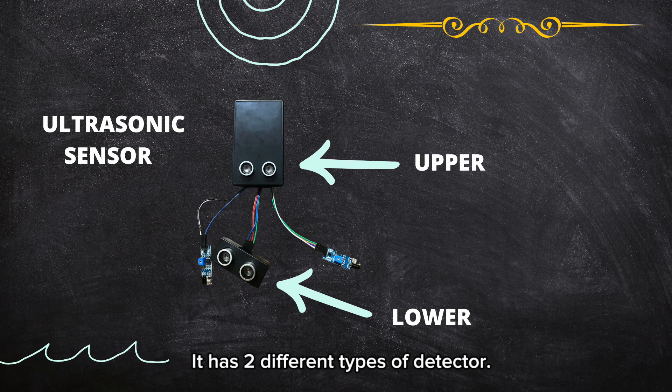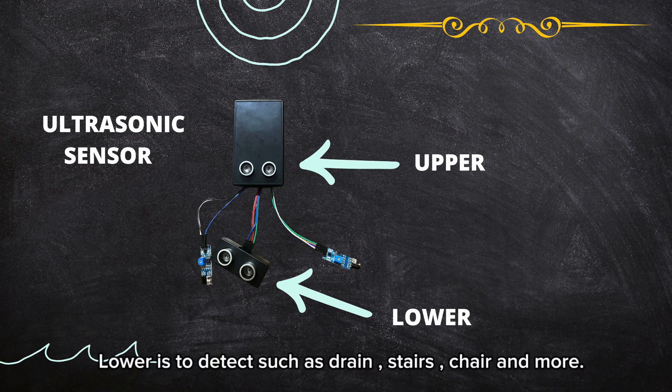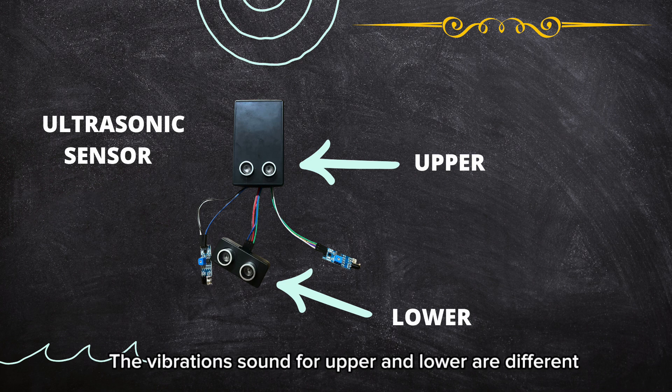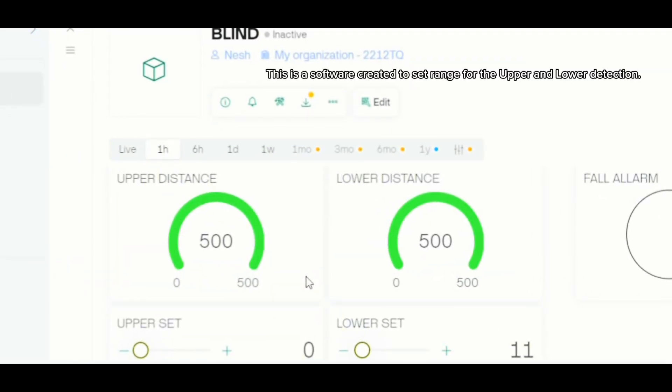There are two different types of detectors: one is for upper and another is for lower. The lower is to detect objects such as drains, stairs, chairs, and more. The vibration sounds for upper and lower are different, so the user can identify whether the danger is up or down.